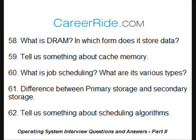What is job scheduling? What are its various types? Job scheduling is an activity to decide the time for a process to receive the resources they have requested. Various types of job scheduling are: first come first served, round robin scheduling, shortest job first, and priority scheduling.